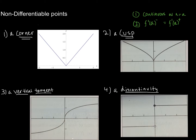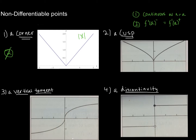The first is what's called a corner. We saw a corner in the opening — this is the function f(x) = |x|, the absolute value function. We want to identify which of the two conditions is not met. Is it continuous? Yes — the limit as we approach from the left and from the right are both approaching zero, so it's continuous. But the slope from the left is negative 1 and from the right is positive 1. So the derivatives do not equal each other — condition two is the one that is not satisfied here.